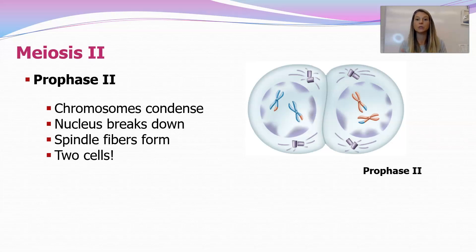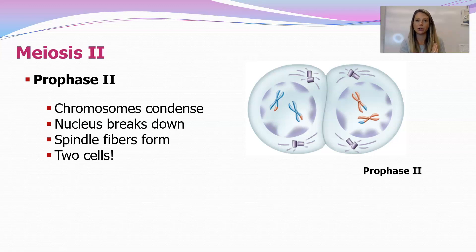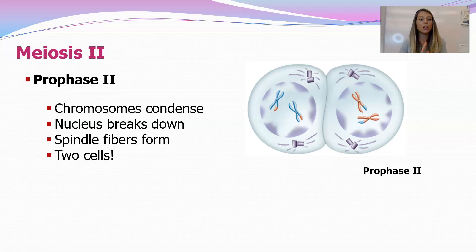Now we move on to prophase II of meiosis II. Meiosis II is basically the same as mitosis — the only difference is that in mitosis you go from one cell to two, whereas in meiosis II you go from two cells to four. The dance of the chromosomes in meiosis II is exactly the same as in mitosis. In prophase II, the chromosomes condense back, the nucleus breaks down, and the spindle fibers form. We have two cells now, and there is no crossing over here — chromosomes are not pairing up or crossing over, as that only happens in prophase I.